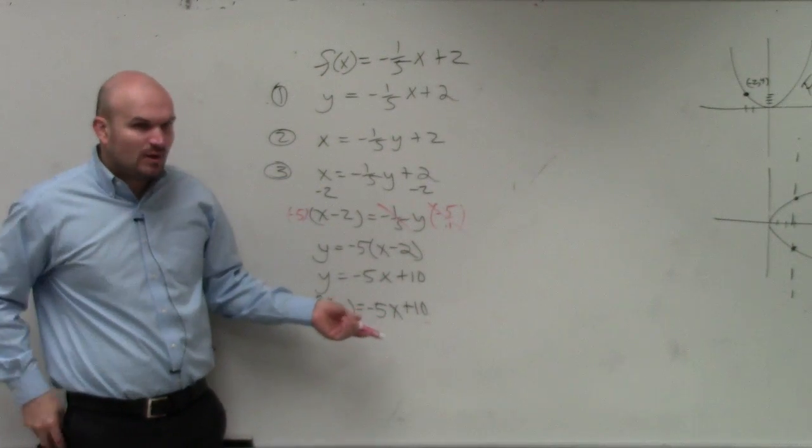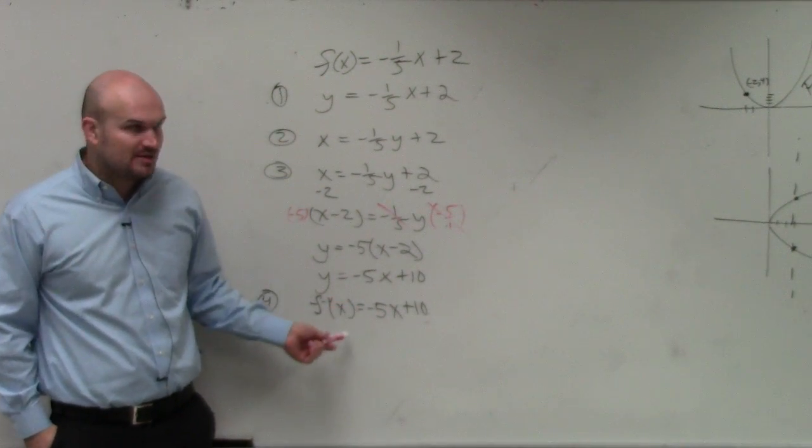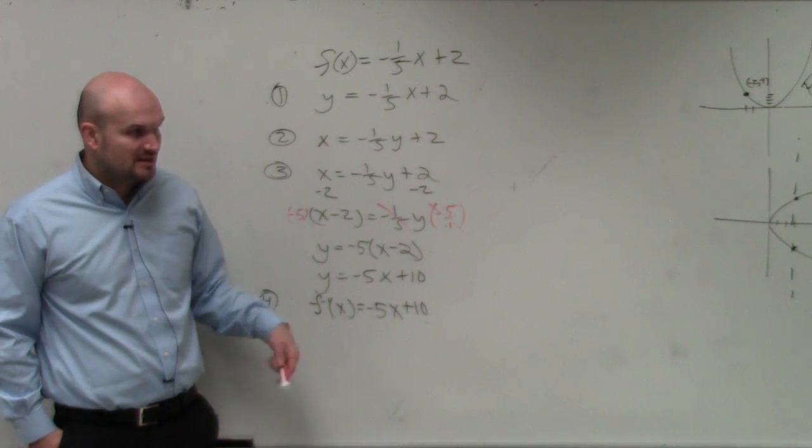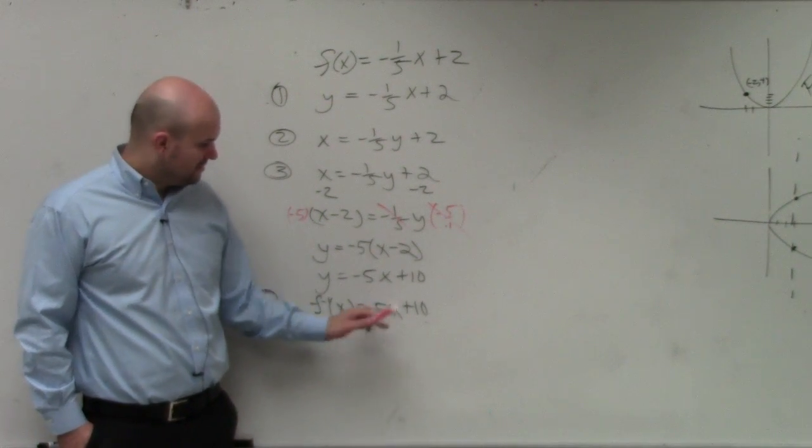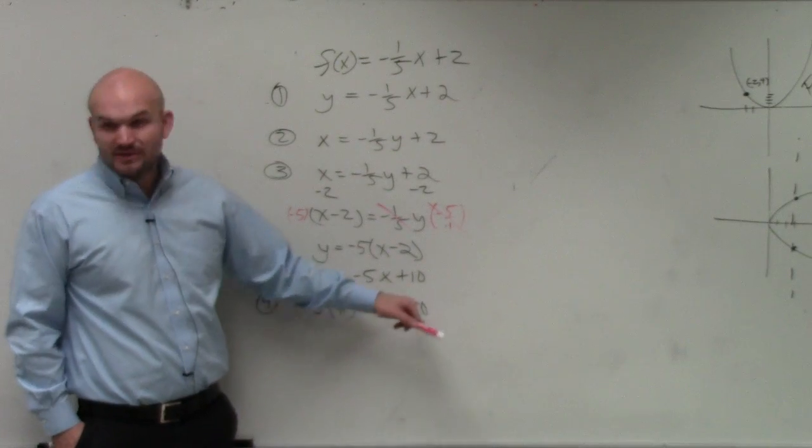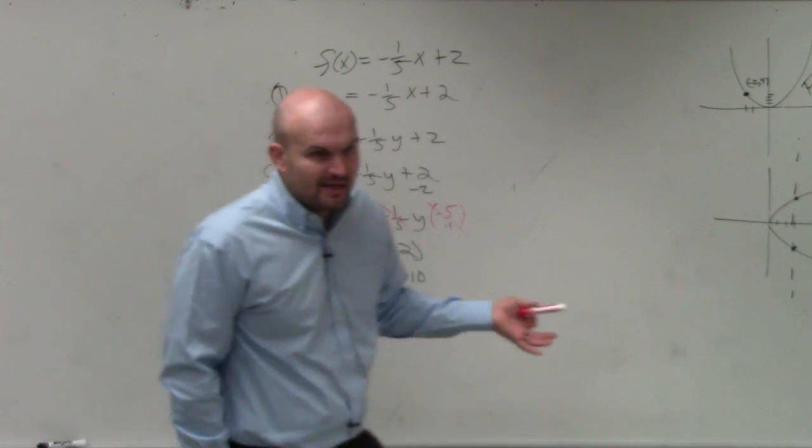Am I only going to get one answer out? Am I only going to get one answer when I plug in for f inverse of x? If I plug 0 in for x, 0 times negative 5 is 0. 0 plus 10 would be 10. But I'm only going to get one answer.